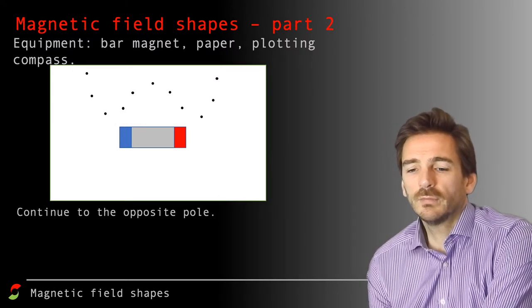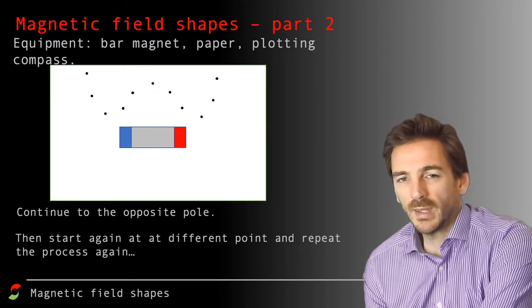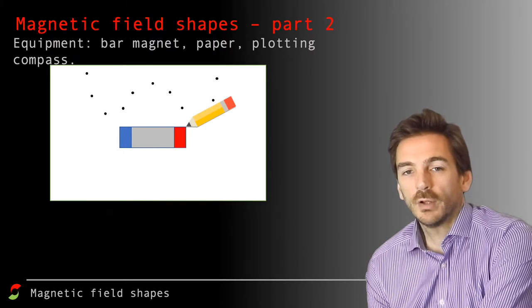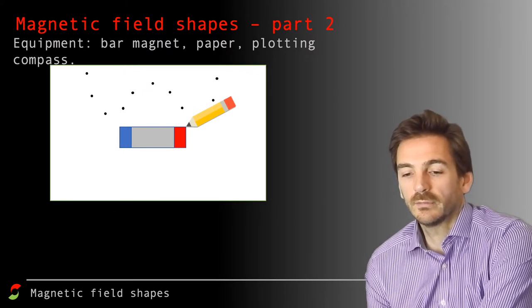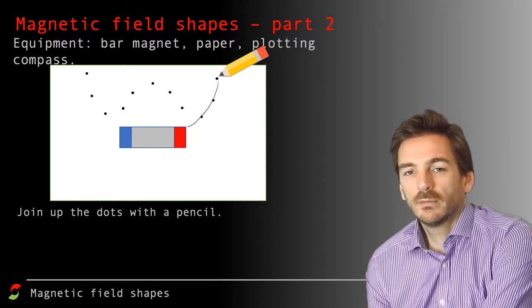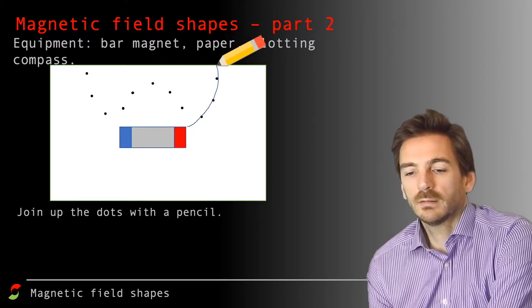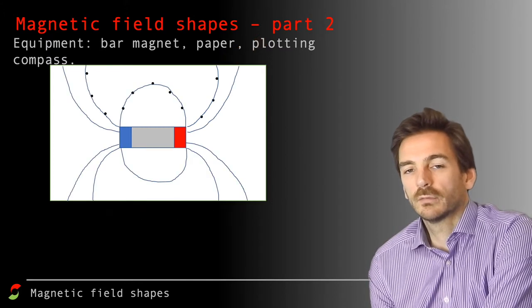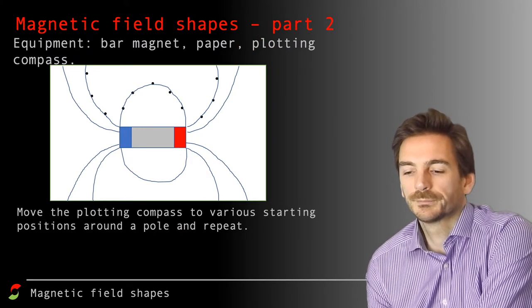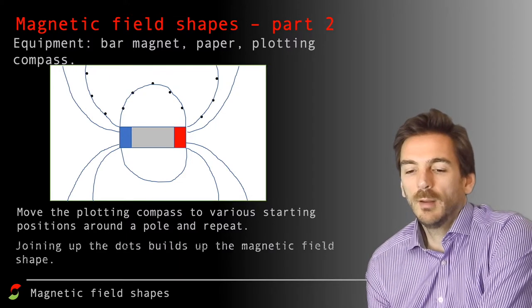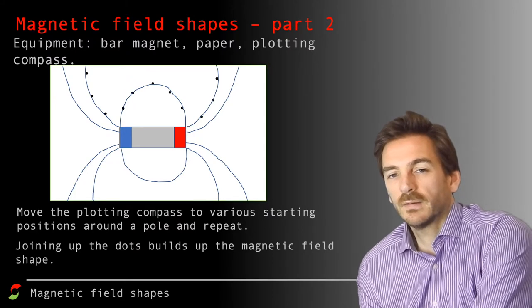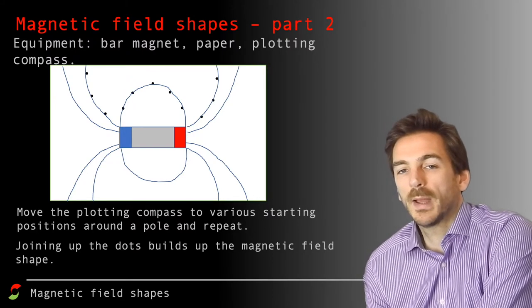Once you've done this, all you need to do then is to get a pencil and draw up the dots that are associated with one of those activities. In this case, this is the first one that we did. If we complete that activity, you'll get a magnetic field shape that looks like this after lots and lots of repeats. That's a much better way because what we get is a better idea about the magnetic field shape around this bar magnet.